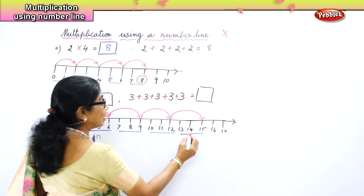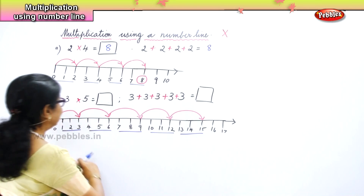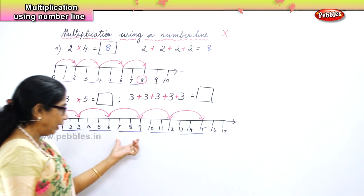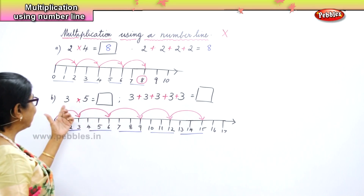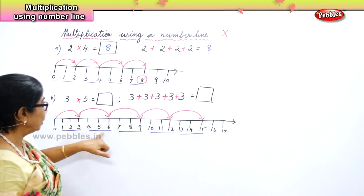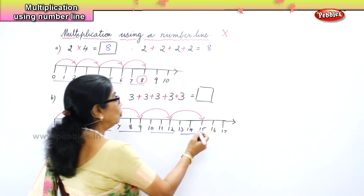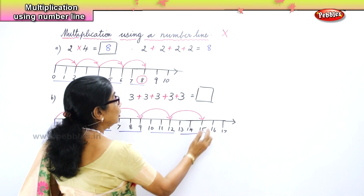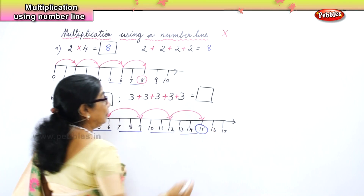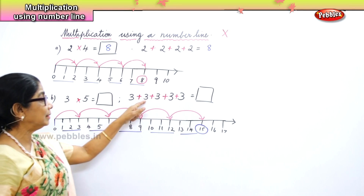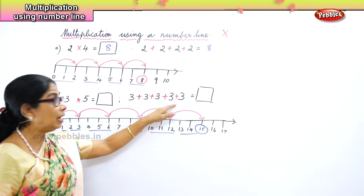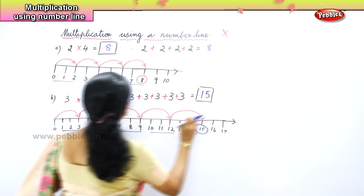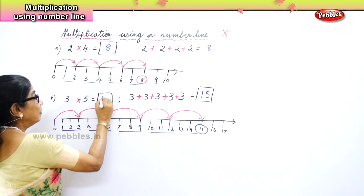Now let's count all the threes — you have one, two, three, four, five jumps. How many times three? Five times. And you get the answer here as fifteen. Your answer is fifteen. Three plus three is six, plus three is nine, plus three is twelve, plus three is fifteen. Your answer is fifteen. So what is three five times? Fifteen.